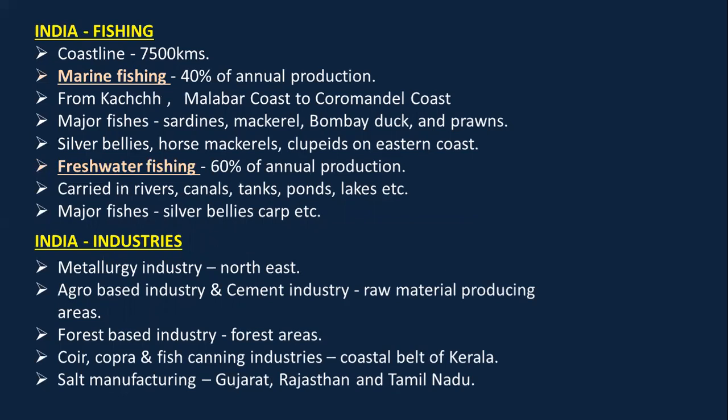India's coastline is about 7500 kilometers. Fishing is divided into marine fishing and freshwater fishing. Marine fishing contributes 40% of the annual production and is practiced from the Kutch to the Malabar coast and Coromandel coast. Major marine fishes are sardines, mackerel, Bombay duck, prawns, silver bellies, horse mackerels, and clupeids on the eastern coast. Freshwater fishing contributes 60% of the annual production and is carried out in rivers, canals, tanks, ponds, and lakes; major fishes are silver bellies and carps.